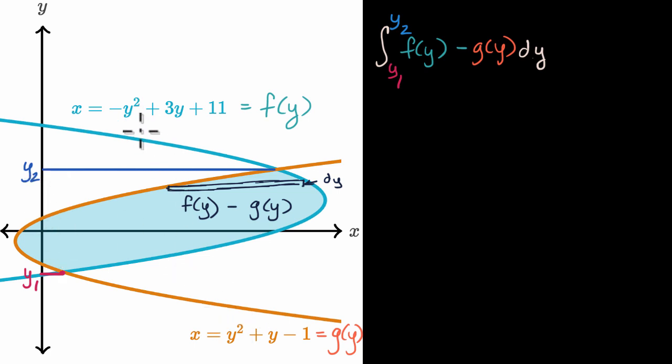Let's think about where these two curves intersect. They are both equal to x, so we can set these two y expressions equal to each other. We know that -y² + 3y + 11 is going to be equal to y² + y - 1. Let's subtract all of this from both sides so that on the right side we have zero, and on the left side we just have a quadratic.